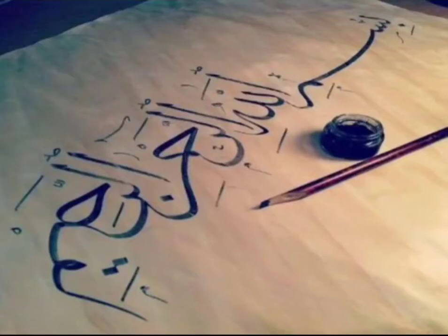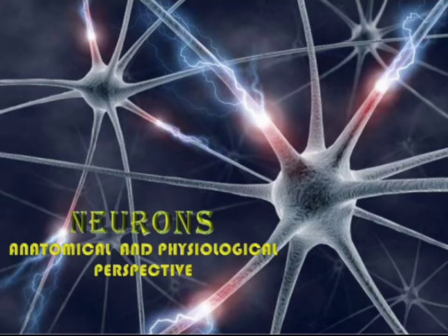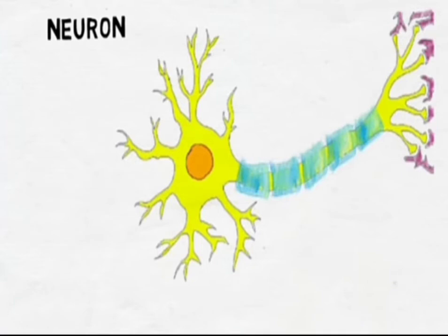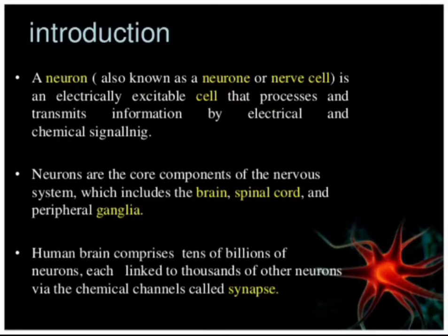Assalamu alaykum. Today's topic of discussion is neurons and the nervous system. A neuron is basically also known as a nerve cell or excitable cell. Neurons are the basic structural and functional unit of the nervous system, responsible for conducting nerve impulses from one part of the body to another. Neurons are basically information processing units.